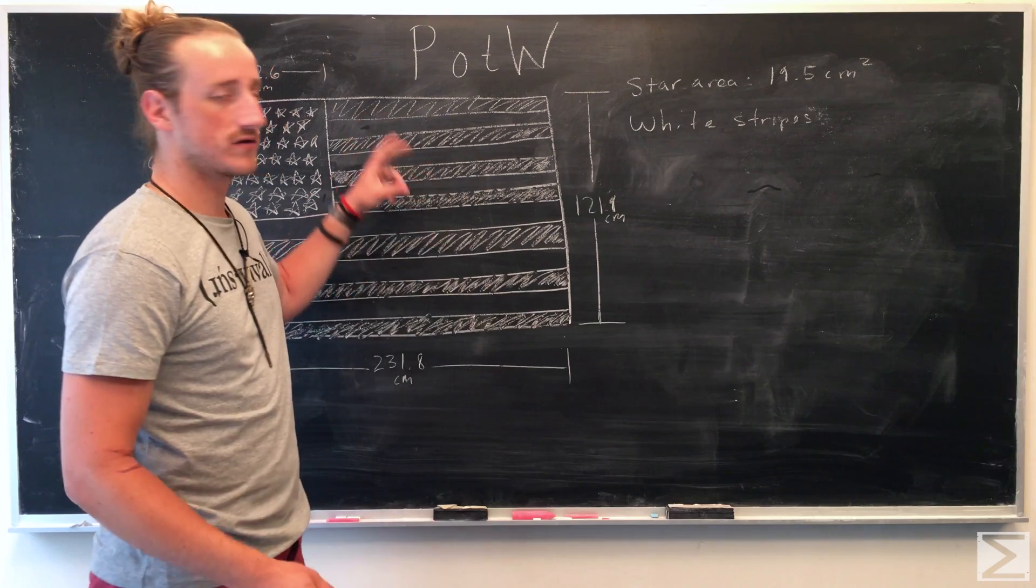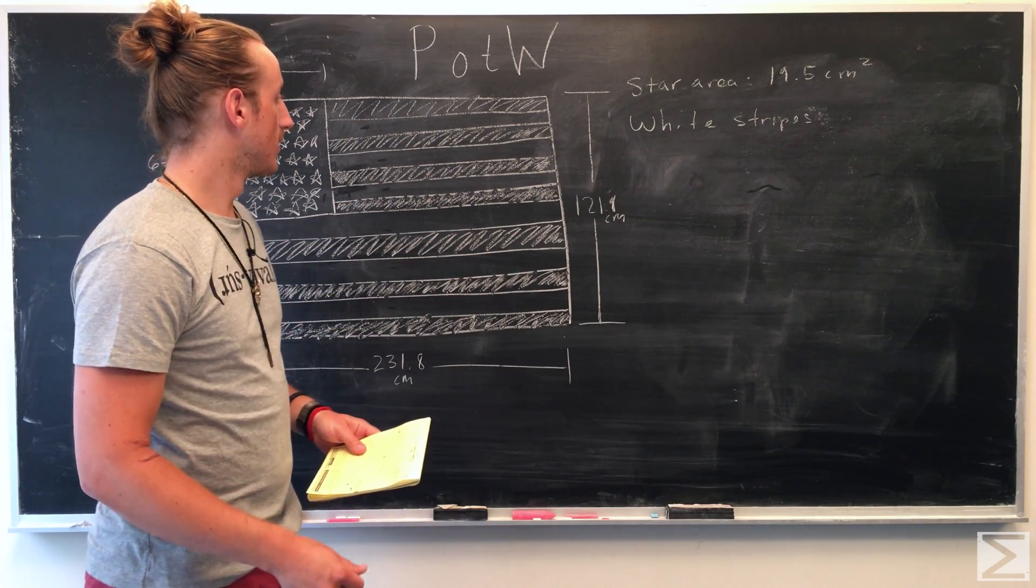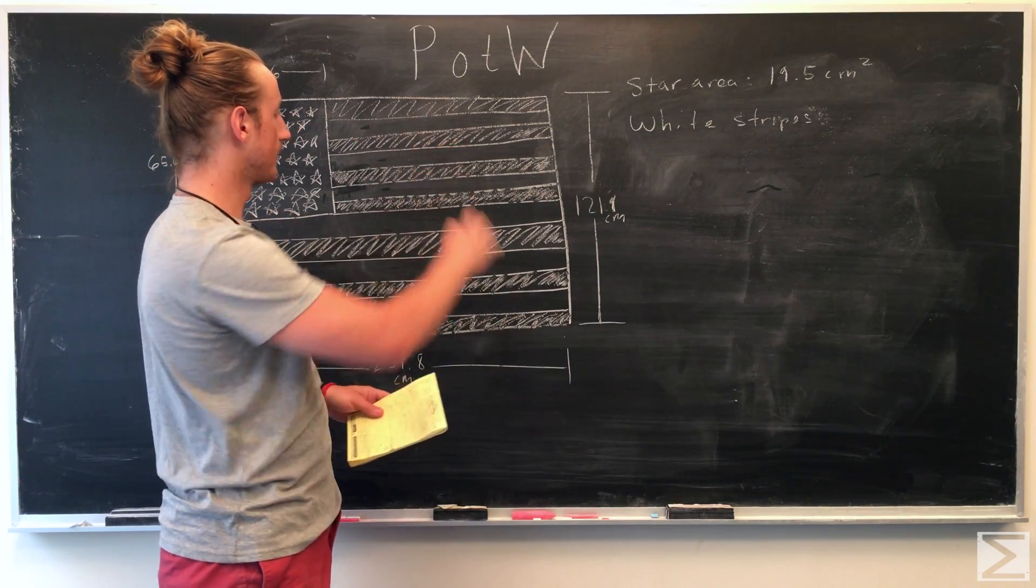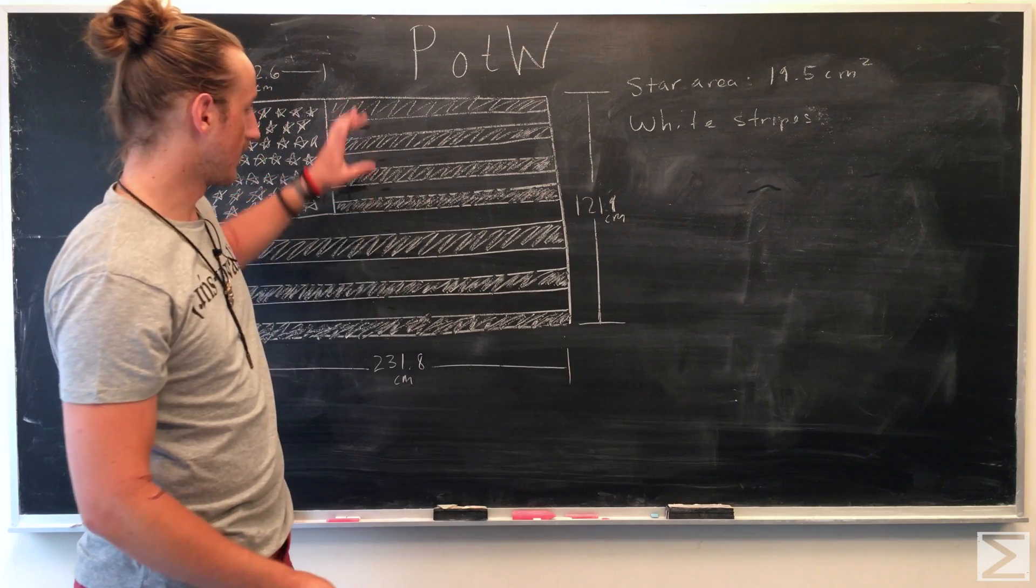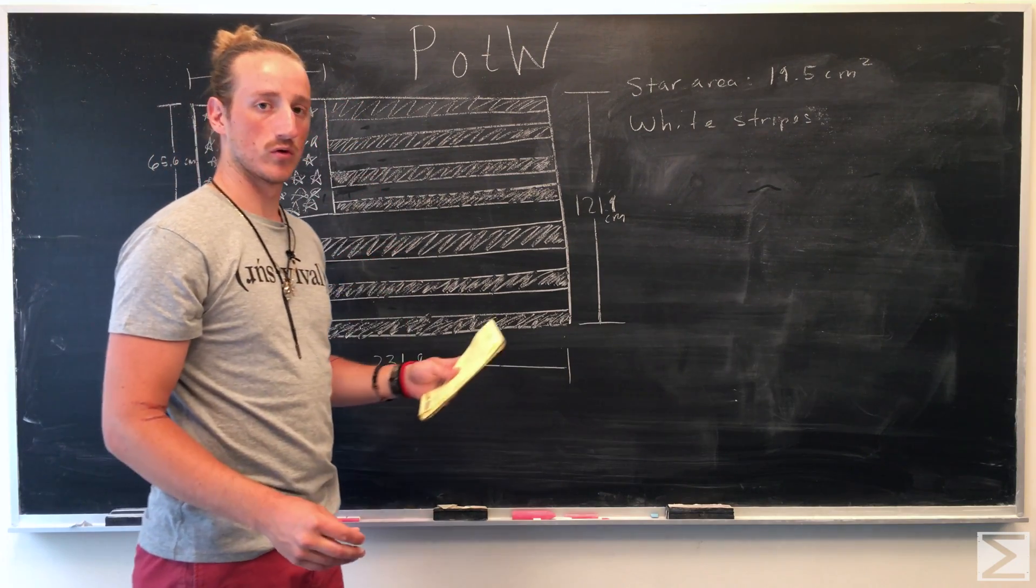How we're going to find the area of each of the white stripes, we're going to separate the flag into two separate parts with a top and a bottom, and then we'll go from there.